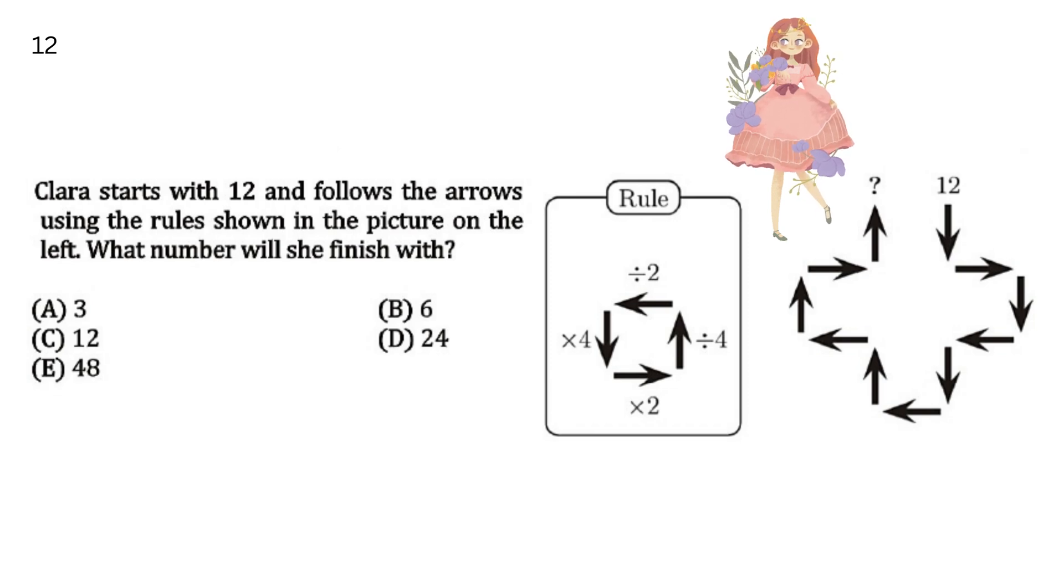To solve this, replace each arrow with the consecutive rule given on the left. नीचे के arrow के लिए 4 से multiply करना है, उपर के arrow के लिए 4 से divide करना है, left को 2 से divide और right को 2 से multiply करना है. Your answer will be B 6.